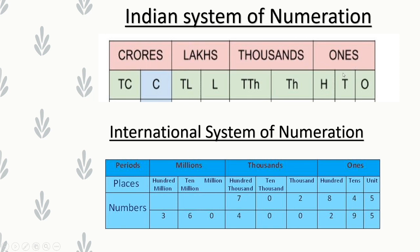Let us recap. In the Indian system, only the 1st period (units) has 3 place values: ones, tens, hundreds. Remaining periods have only 2: thousands period has thousands and ten-thousands; lakhs period has lakhs and ten lakhs; crores period has crores and ten crores. Whereas in the International system, each period has 3 place values: units period has ones, tens, hundreds; thousands period has thousands, ten-thousands, hundred-thousands; millions period has millions, ten millions, hundred millions; followed by billions, trillions and so on.